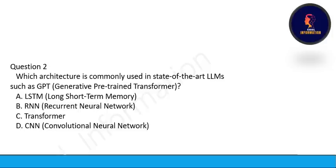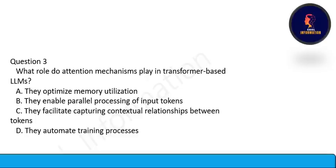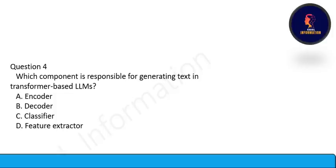Next question: Which architecture is commonly used in state-of-the-art LLMs such as GPT — is it LSTM, RNN, Transformer, or CNN? This is also a very fundamental one. Transformer is commonly used. Option C is correct. Next question: What role do attention mechanisms play in transformer-based LLMs? They facilitate capturing contextual relationships between tokens. Option C is correct.